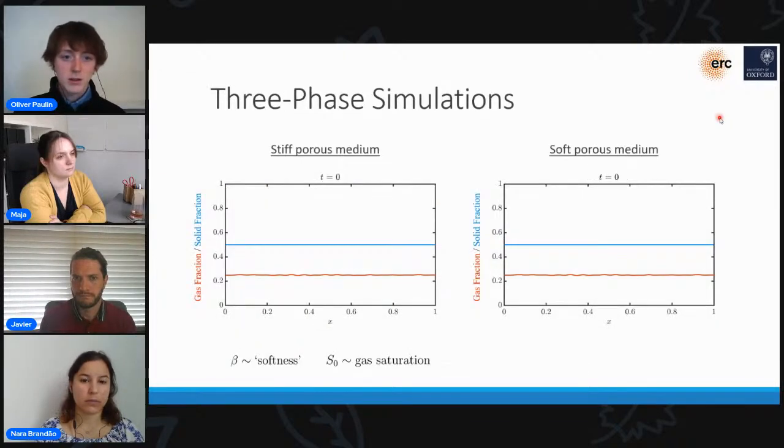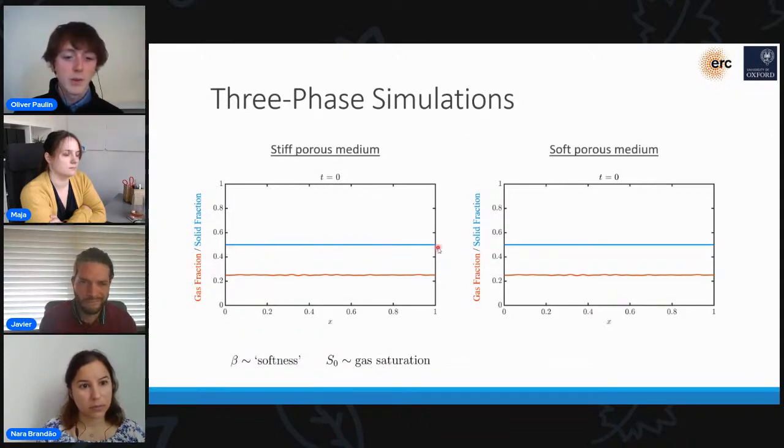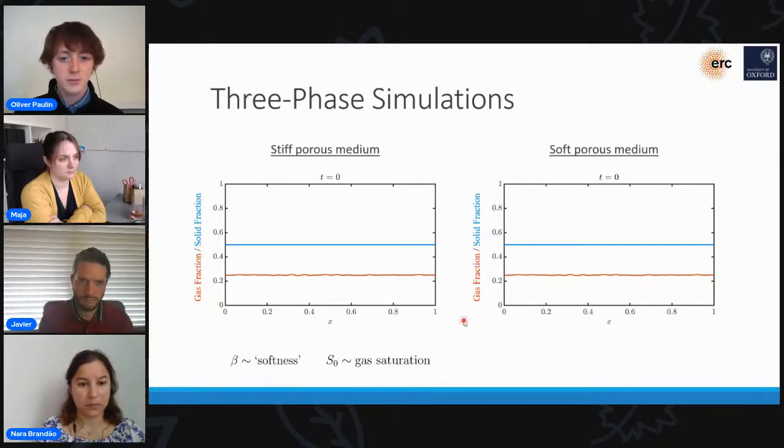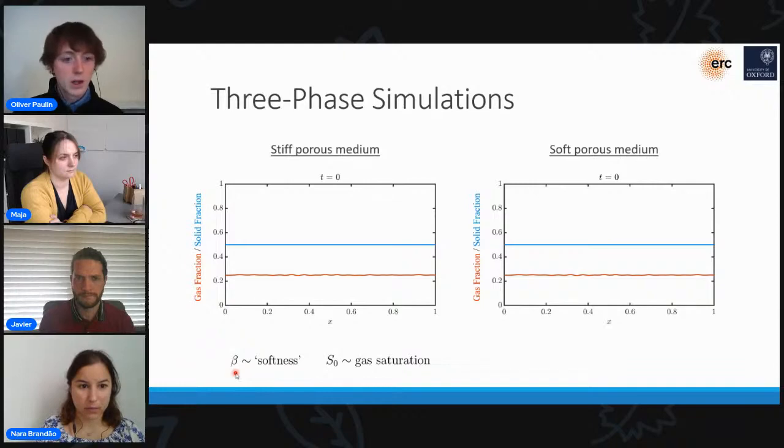For the three-phase simulations, we essentially have a combination of these two effects. So I'm going to initialize these simulations with an undeformed porous solid skeleton here, which is denoted by this blue line. And then within the pore space of the solid skeleton, we're going to have, again, an almost homogeneous gas distribution. And the amount of gas we've got in the system is just going to be quantified by this parameter that I'm going to call S0, which is just the initial gas saturation. I'm going to run the simulations in a second for two different cases, one for a stiff porous material, one for a soft porous material, so we can compare what happens in the two cases. The softness or deformability of the porous medium, I'm just going to quantify by a dimensionless parameter that I call beta.